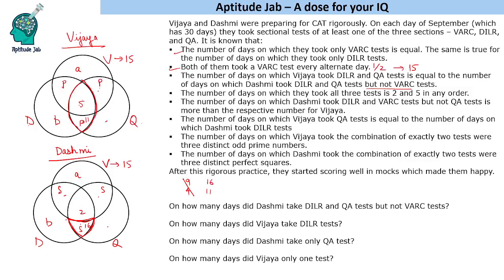But if Vijaya's all-three is 5 and the DILR+QA portion is 11, this combined with the VARC circle of 15 would exceed 30 days total. So this case is not possible. Therefore, the all-three value for Vijaya cannot be 5 — it must be 2, making Dashmi's all-three value 5.